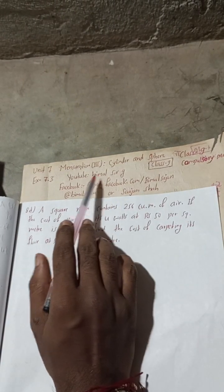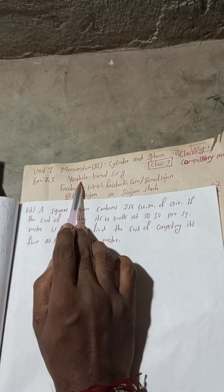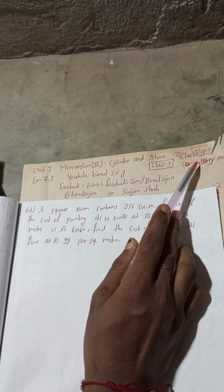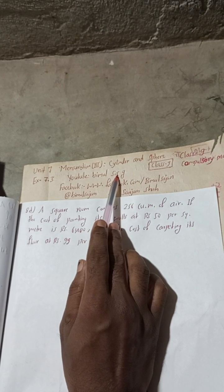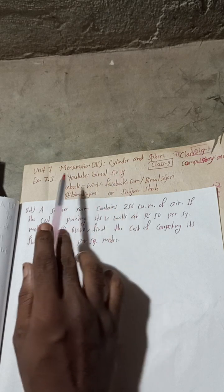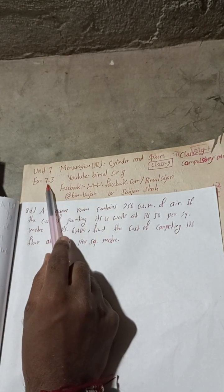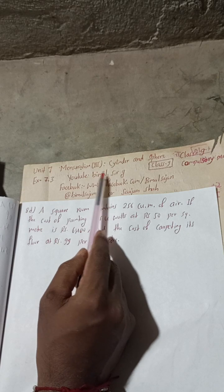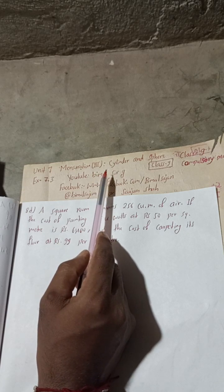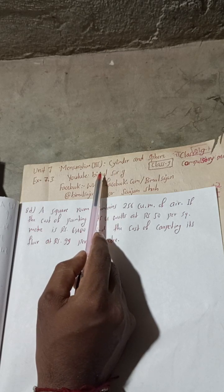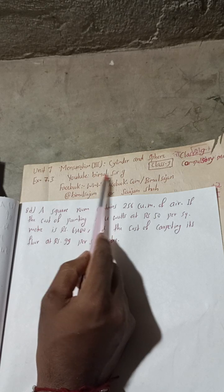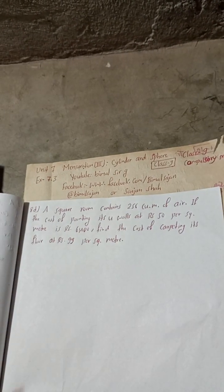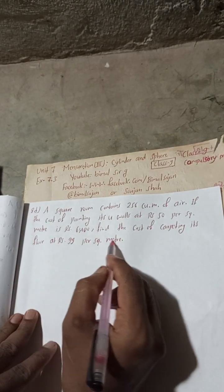Radhe Radhe, Jaya Sri Krishna. Class 9 and 10 students, welcome back to Bimal Sarji's YouTube channel. This is question number 8D, exercise 7.3, unit 7 mensuration, third part: cylinder and sphere, class 9 compulsory maths. Check the playlist — you will find class 9 and 10 compulsory maths, optional maths, and science questions. Also find reasoning parts and a trick to learn the first 20 elements.